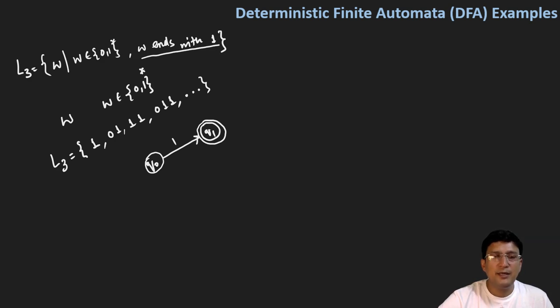Now, it says that w should end with one. If it's a string, the string has a start, so on zero I should remain at q zero state. On one I will come to q1 state. When I'm at q1 state, if zero comes I should move, and on one I should stay.